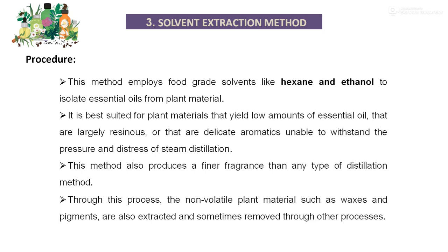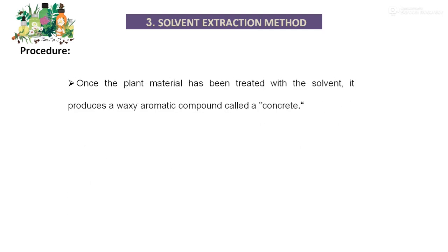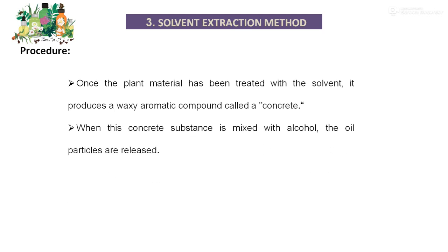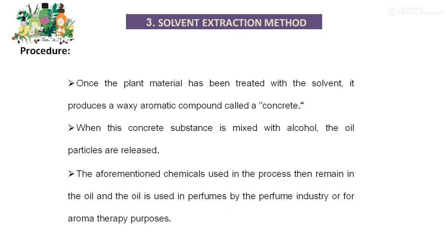Through this process, non-volatile plant material such as waxes and pigments are also extracted, and sometimes removed through other processes. Once the plant material has been treated with a solvent, it produces a waxy aromatic compound called a concrete, which is a combination of fats and oils. When this concrete substance is mixed with oil, the oil particles are totally released, and it is then processed for vacuum distillation.